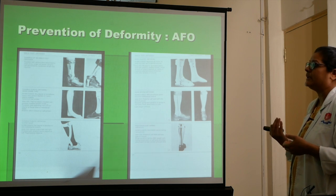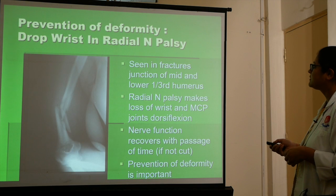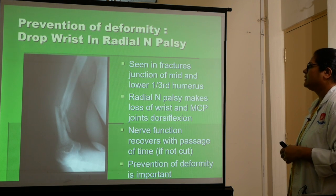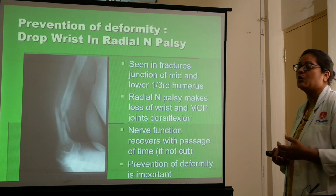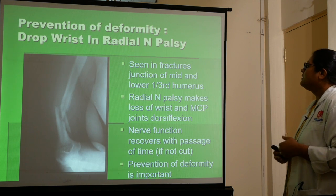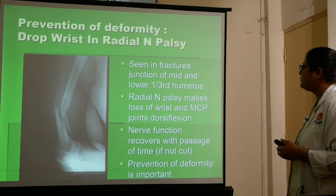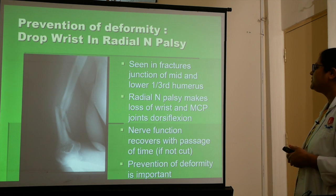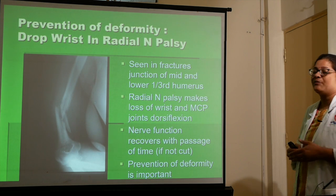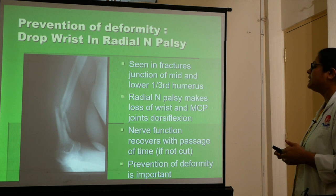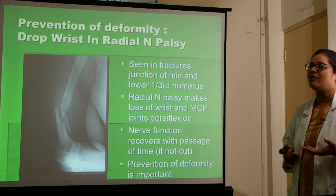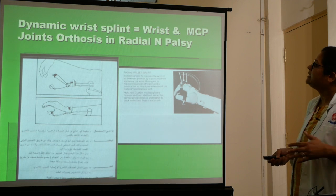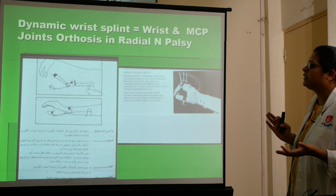Prevention of deformity: drop wrist in radial nerve palsy is basically seen in fracture at the junction of the mid and lower third of the humerus. Radial nerve palsy causes loss of wrist and metacarpophalangeal joint dorsiflexion. Nerve function recovers with passage of time if not cut. Prevention of deformity is important and is achieved by the use of orthosis. This is how a radial palsy splint looks.